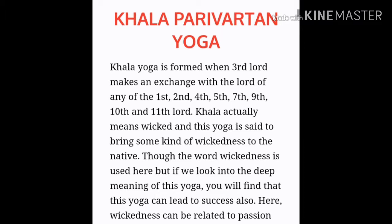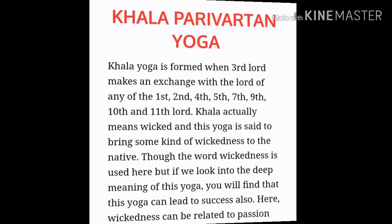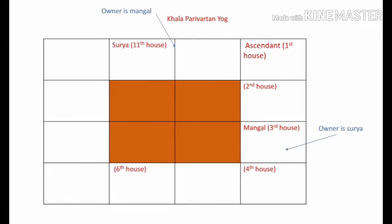Let us now understand Khala Parivartan Yoga with a practical example. Again the Kundali is of a Gemini ascendant. The third house has Mangal placed in it. The third house is the sign of Leo, which is owned by the Sun or Surya. So the owner of the third house is Surya and the third house has Mangal placed in it. The 11th house is owned by Mangal, and the 11th house has Surya placed in it. So there is an exchange of houses between the third lord and the 11th lord — that is, between Mangal and Surya. Because the third lord has exchanged house with the 11th lord, this forms a Khala Parivartan Yoga.